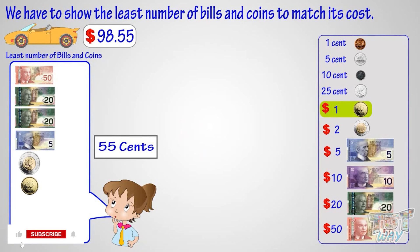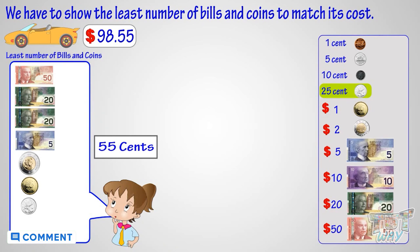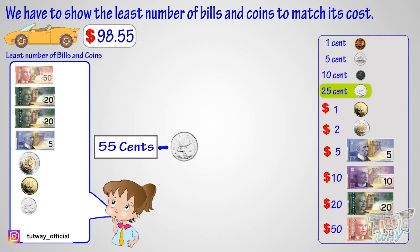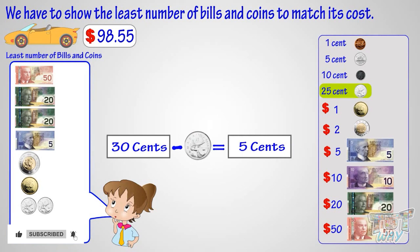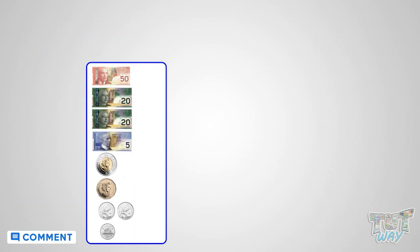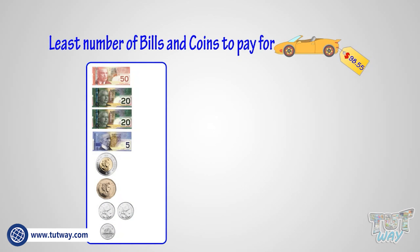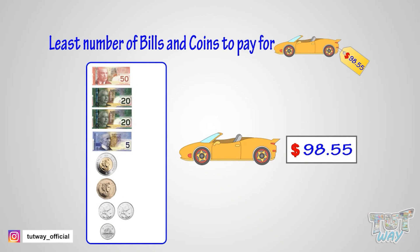Now we are left with fifty-five cents — this amount is less than a dollar, so we will use smaller coins than a loonie. We will use a quarter and subtract twenty-five cents from fifty-five cents, leaving thirty cents. Again, take out a quarter and subtract twenty-five cents from thirty cents — we are left with five cents, and for that we can use a nickel. Yes, we are done! We have selected the least number of bills and coins to pay for a toy of ninety-eight dollars and fifty-five cents.